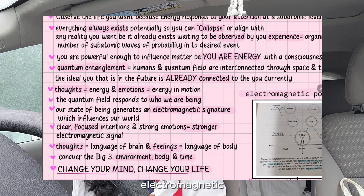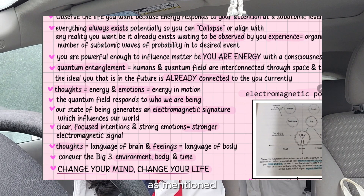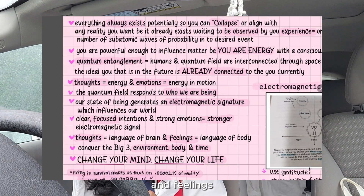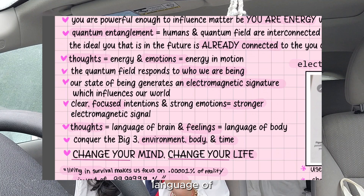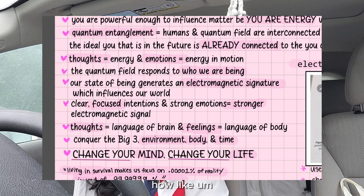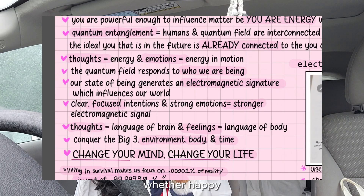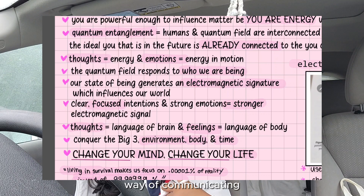As mentioned in the book, thoughts are the language of the brain and feelings are the language of the body. This makes sense — when we communicate to ourselves in our mind, we think in a language, and then our body feels a certain way, whether happy, sadness, or anger. The body and mind do have their own way of communicating.